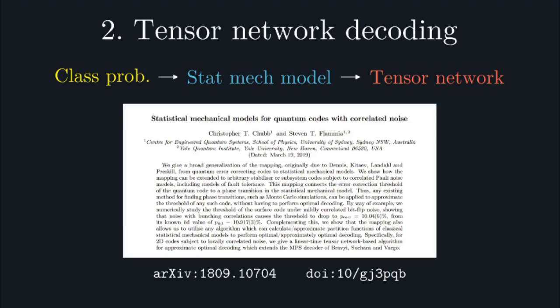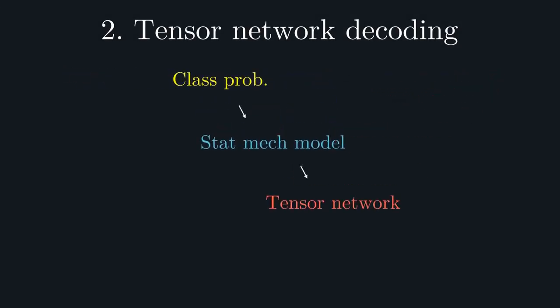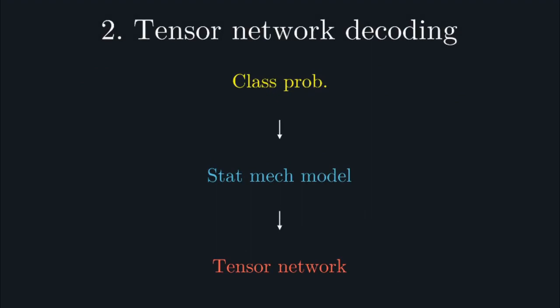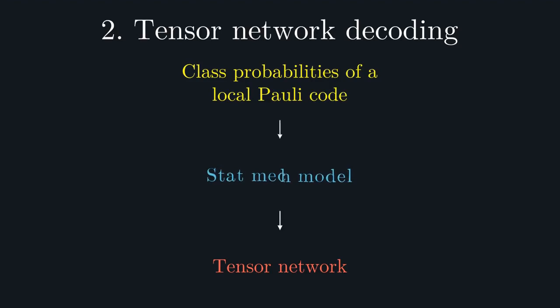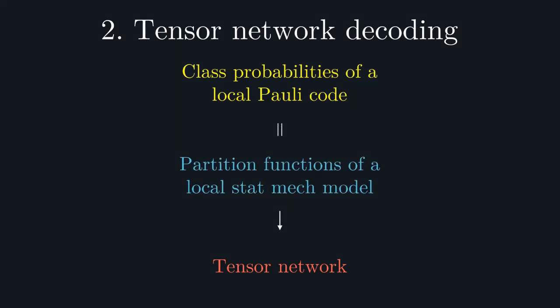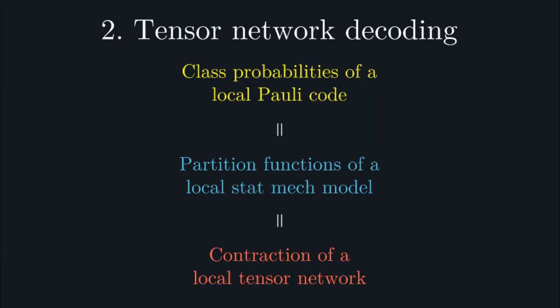So, let's be concrete about how this mapping works. This mapping relates three different quantities. The first are the error class probabilities of a local code. As we've seen, calculating these is key to optimal decoding. The second are the partition functions of a local STATMEC model. And then finally, we have the contraction of local tensor networks.